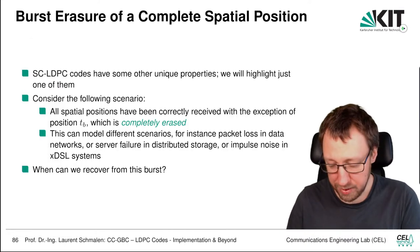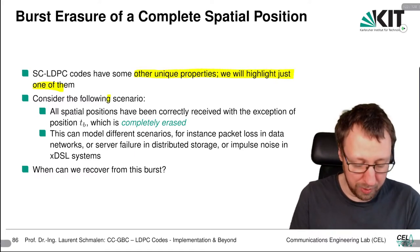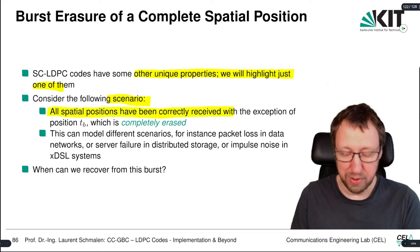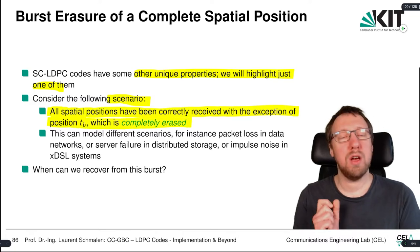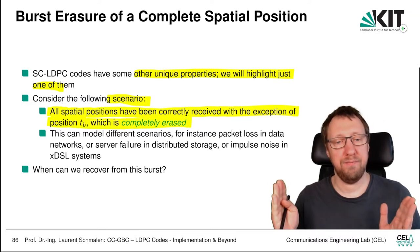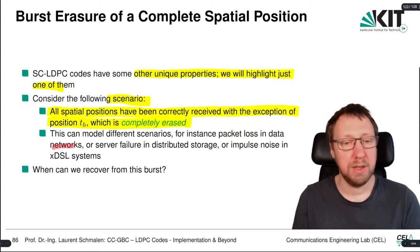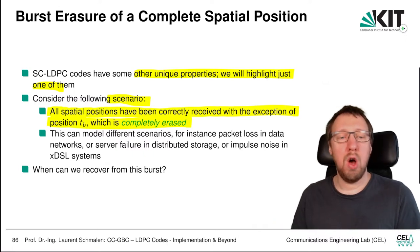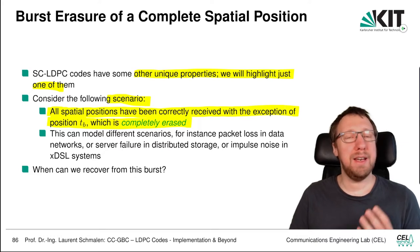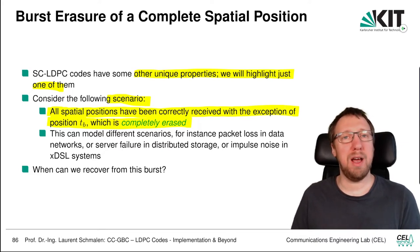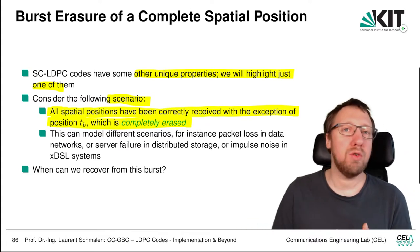This is one of the unique properties we're going to highlight. The scenario is: all spatial positions are correctly received except spatial position t_b, which is completely erased — that's a so-called burst erasure. The advantages and applications include packet loss in data networks and server failures in distributed storage.